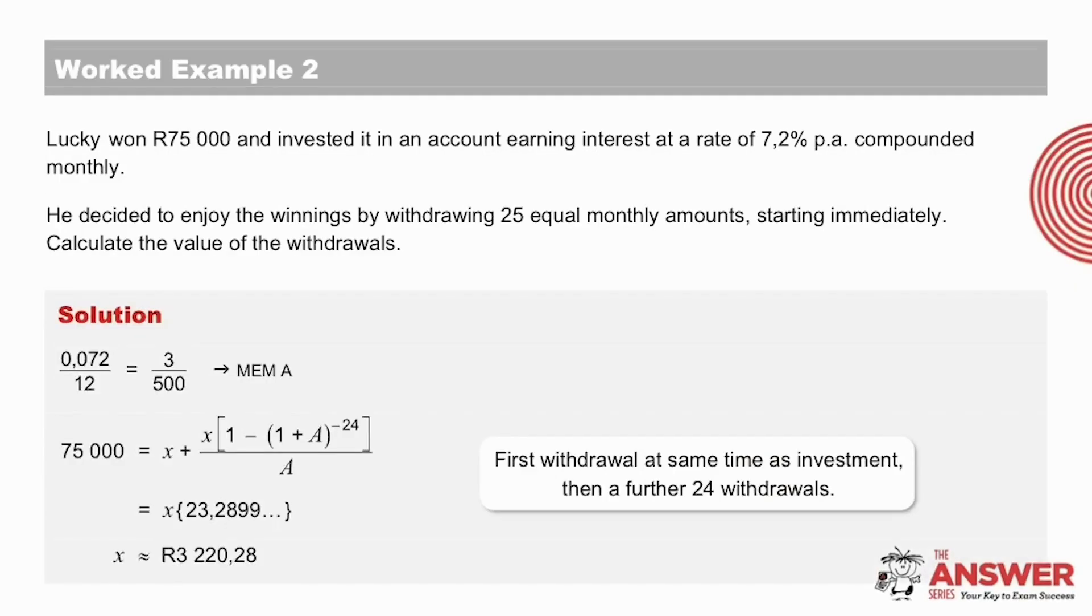Let's have a look now at the solution together. So first the 7.2% per annum compounded monthly into our calculator memory. And then we are given the present value of the investment. And because Lucky took his first withdrawal immediately, we consider the first withdrawal separately. And the further 24 withdrawals we use in the standard present value annuity formula.